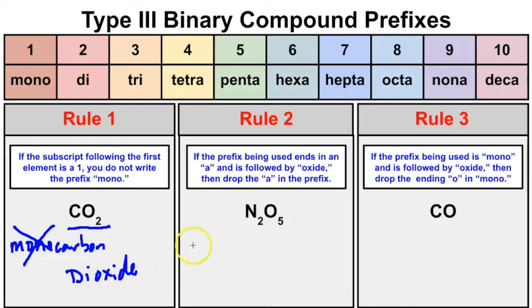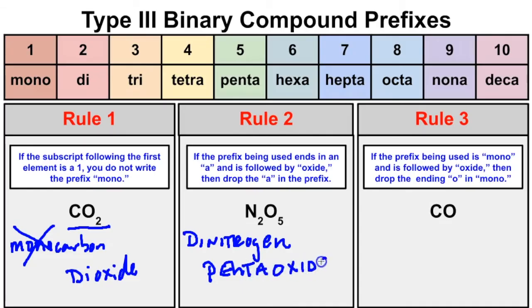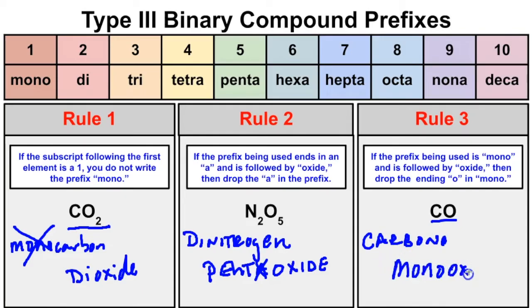For N2O5, there are 2 nitrogens — dinitrogen — and 5 oxides. The prefix for 5 is penta, giving pentaoxide. However, Rule 2 states that if a prefix ends in 'a' followed by 'oxide,' we drop the 'a,' so it becomes dinitrogen pentoxide. For CO, we don't write mono on the first element — it's just carbon. Then with 1 oxygen, mono plus oxide gives us Rule 3: when mono precedes oxide, we drop one 'o,' making it carbon monoxide.